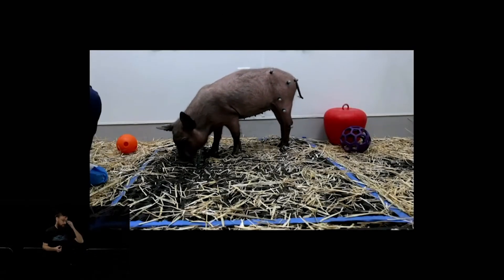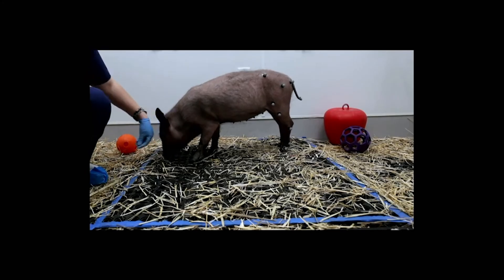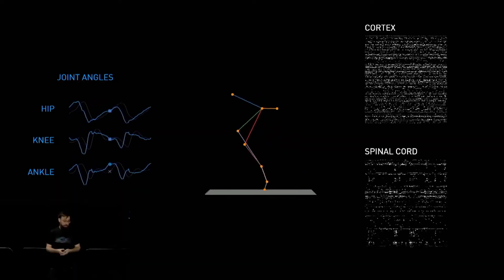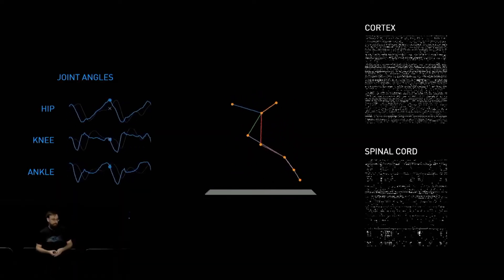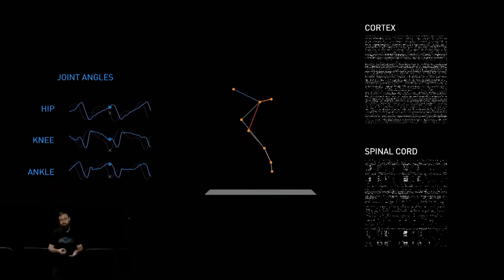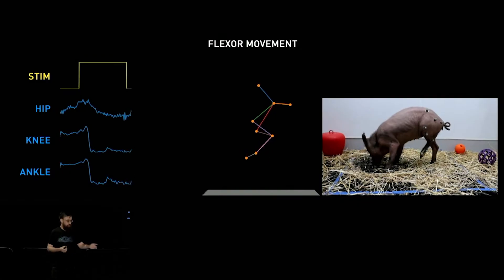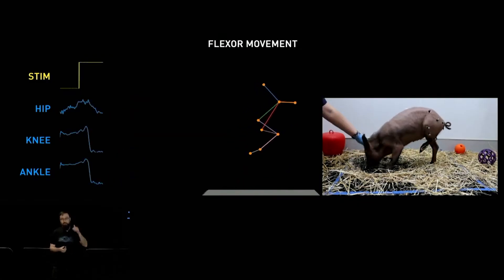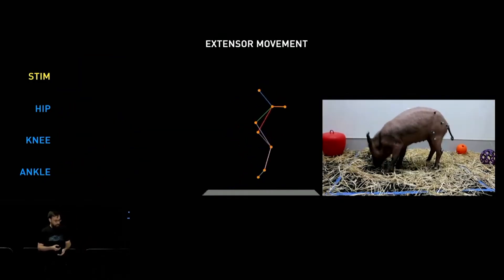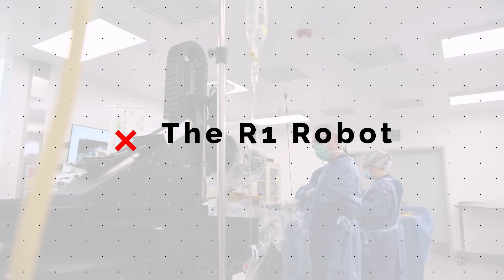Neuralink is already putting this theory into the testing phase. They demonstrated a pig that has two N1 devices, one in the brain and one in the spinal cord. This allows the Neuralink scientists to stream data from the motor cortex and the spinal cord simultaneously so they can decode the movement by learning how an activation in the brain translates to an activation in the leg. And that got even crazier when they showed how they could actually induce a specific movement in the pig's leg, like a contraction or extension, just by stimulating a particular neuron through the N1 device. We also got our first look at the surgical process behind a Neuralink implant.